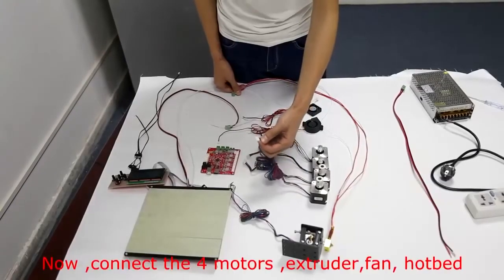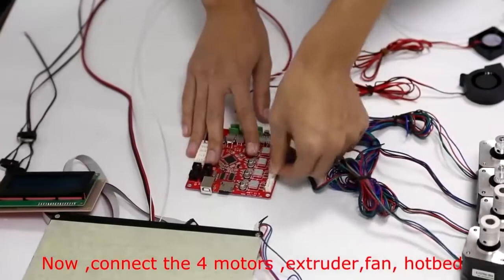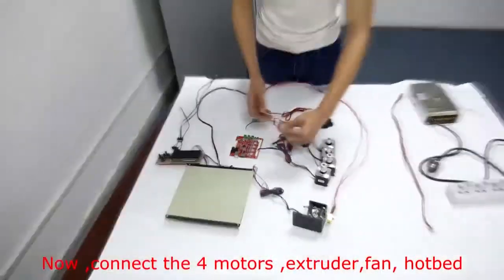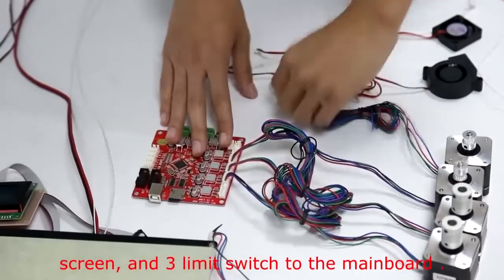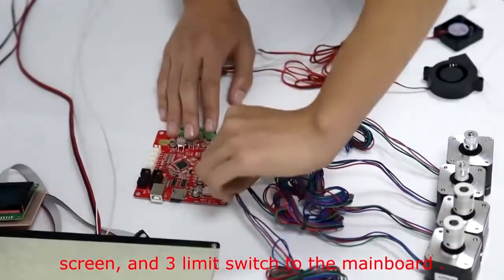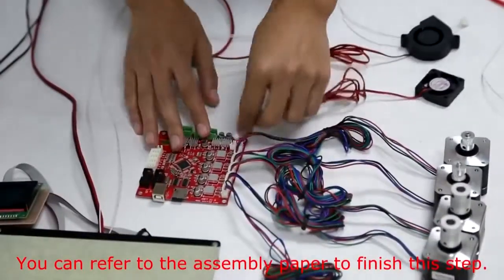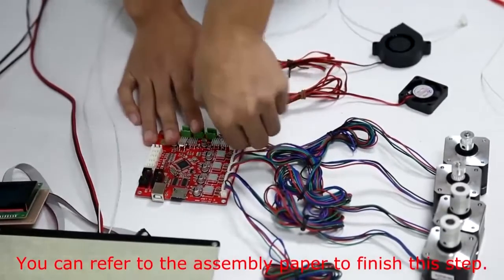Now, connect four motors, extruder, fan, hotbed, screen, and three limit switches to the mainboard. You can refer to the assembly paper to finish this step.